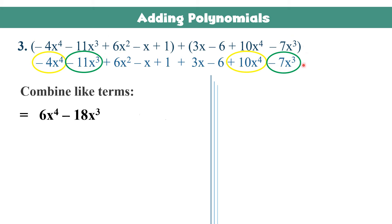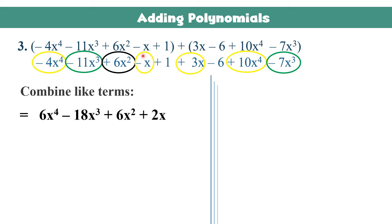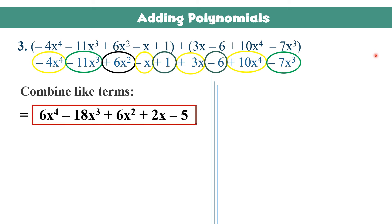Then we have 6x squared — there is no other term with x squared, so just copy positive 6x squared. For the variable x: negative x combined with positive 3x. Since this x has a coefficient of 1, we subtract 3 and 1, get 2, and copy the sign of the larger number, giving positive 2x. For constants, positive 1 and negative 6 combine to give negative 5. The answer is 6x raised to 4 minus 18x cubed plus 6x squared plus 2x minus 5.